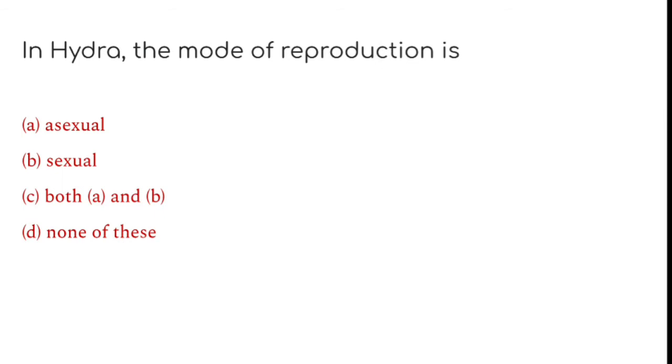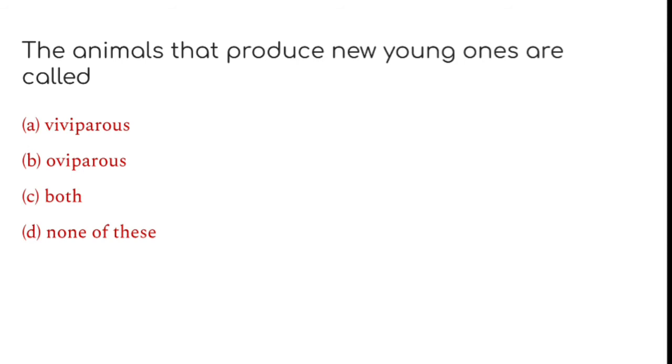In Hydra, the mode of reproduction is both A and B. The animals that produce new young ones are called viviparous.